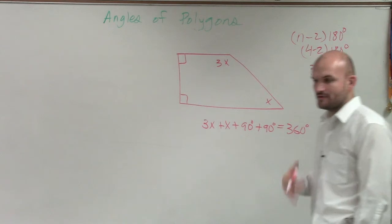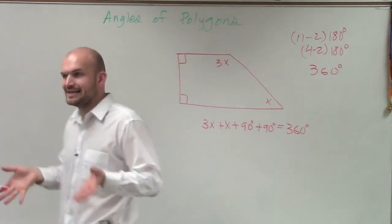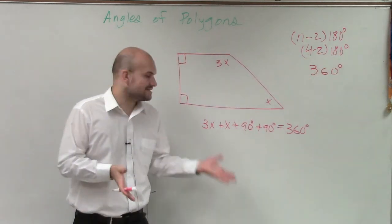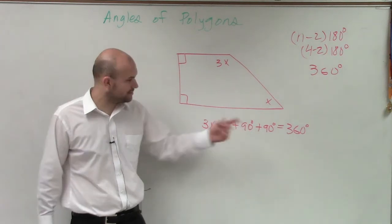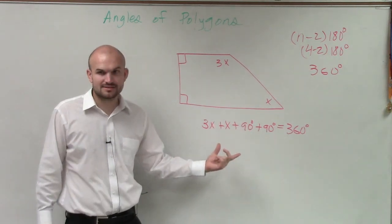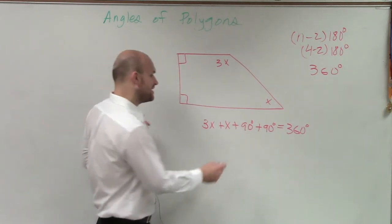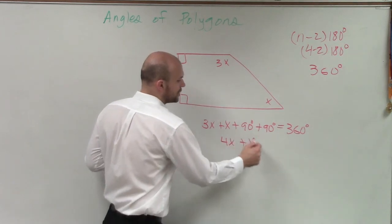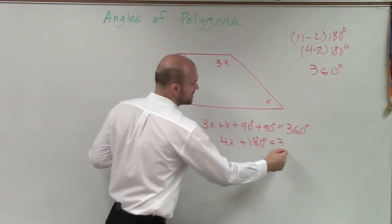So now, while solving my equation, now what I need to do is I need to simplify both sides of my equation. Well, can I add 3x and x? Yeah, I can simplify that to 4x plus 180 degrees equals 360.